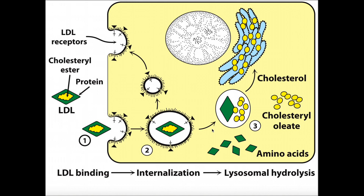A lysosome is an organelle that exists in pretty much all cells, and it contains all sorts of destructive enzymes: hydrolytic enzymes, proteolytic enzymes, reactive oxidative species, acid — basically something to degrade everything inside the endosome. A lysosome combines with the endosome to form a lysoendosome, and once fused, all those enzymes and acid start breaking up everything inside the endosome.